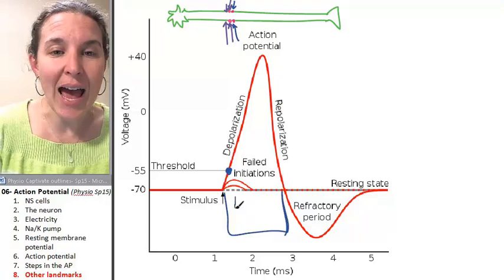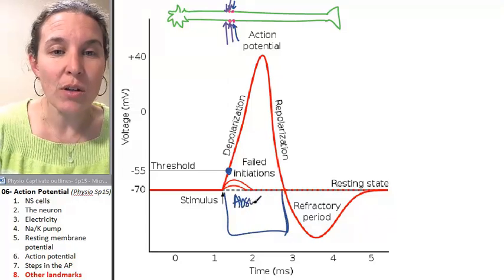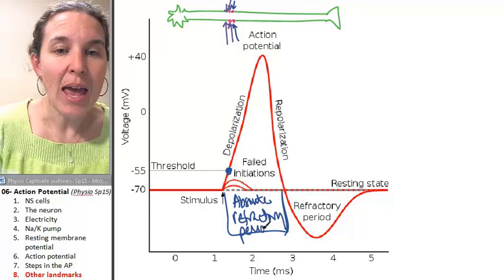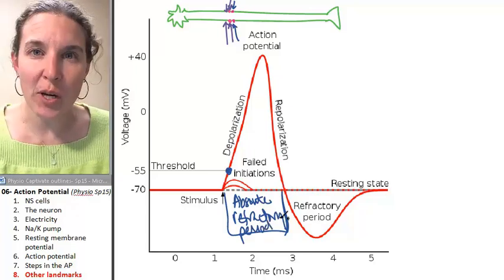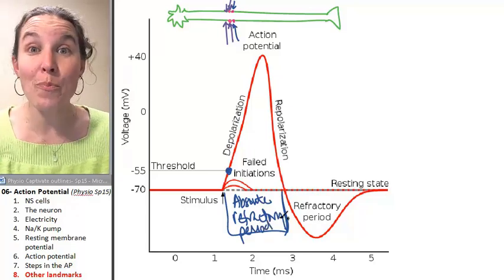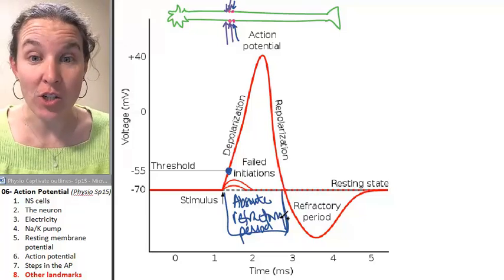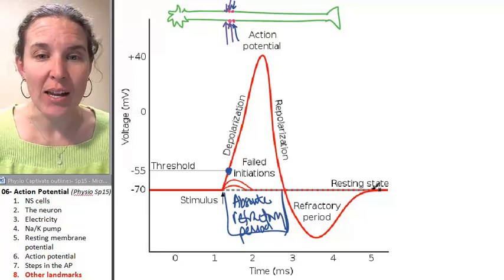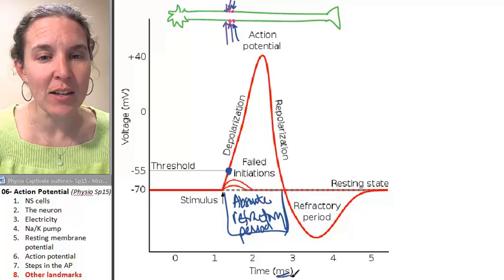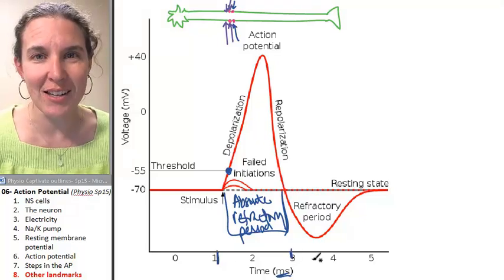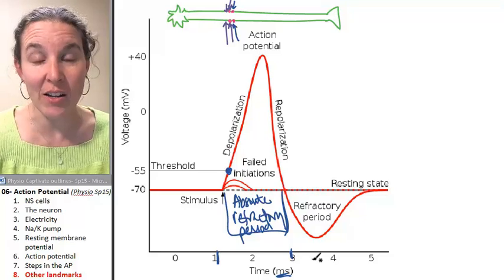And during the absolute refractory period, it doesn't matter how big the bear is. You will not fire another action potential, no siree. Now, these are milliseconds, my friends. So you basically have two milliseconds where you will not fire another action potential.